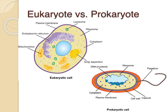This slide shows the differences between a prokaryote and a eukaryote. The main thing to look for is the nucleus, which the prokaryote does not have. The animal cell shown would not have a cell wall, while the prokaryotic cell at the bottom has a cell wall and also a flagellum.